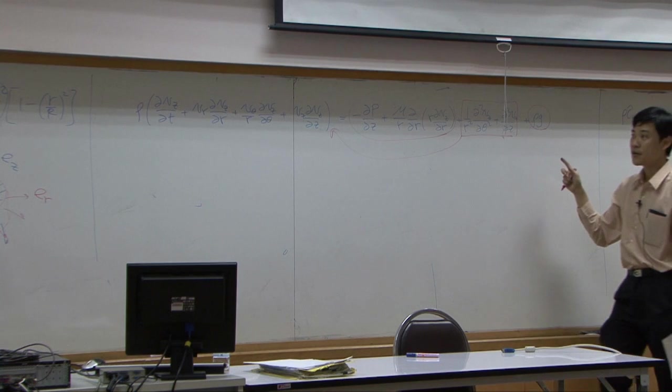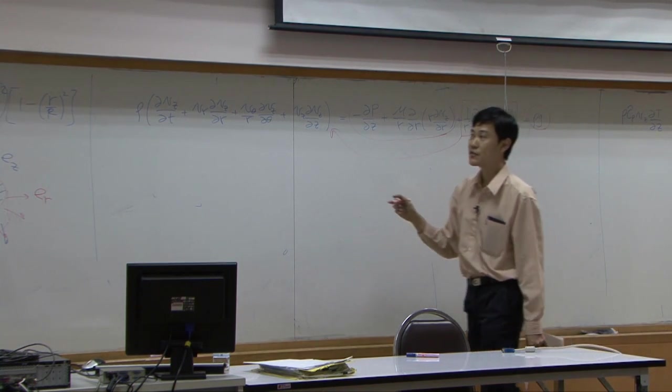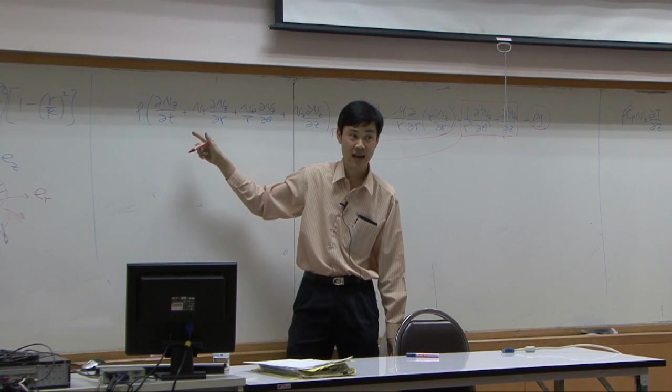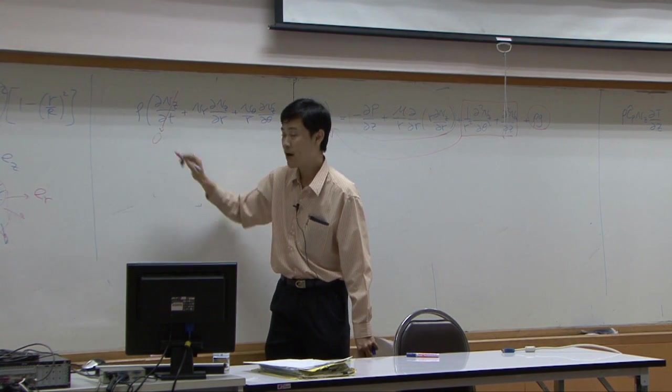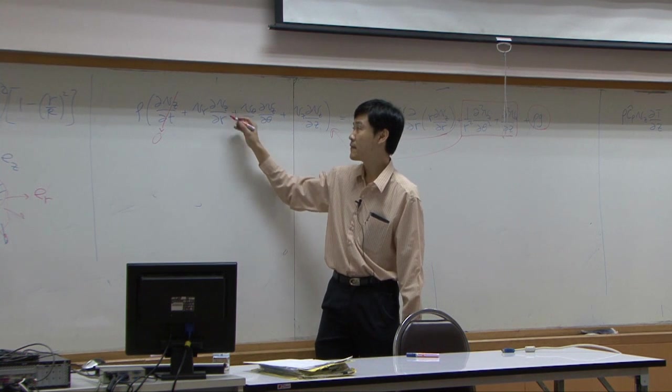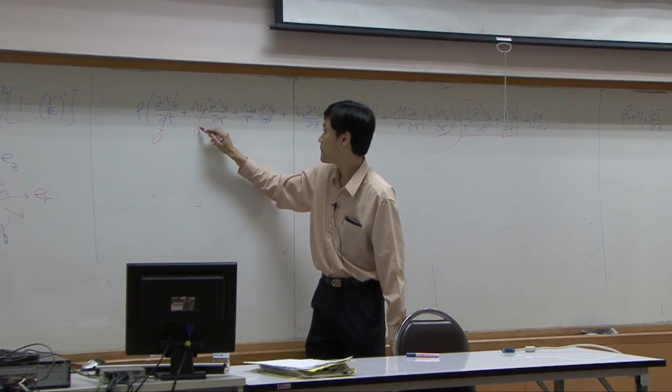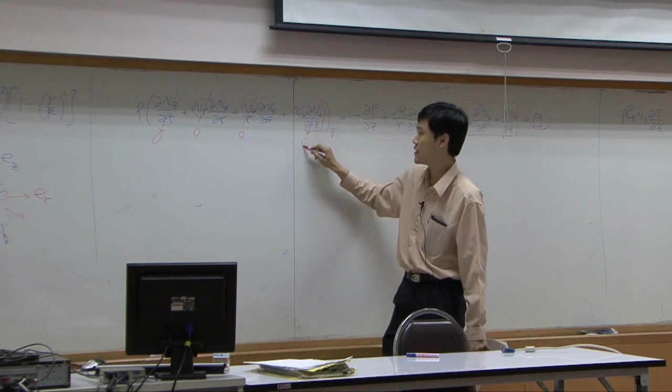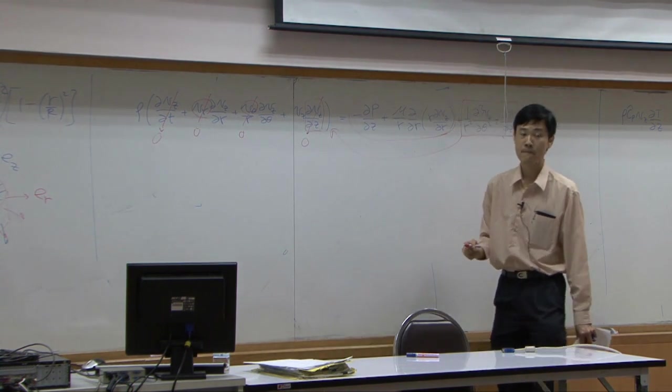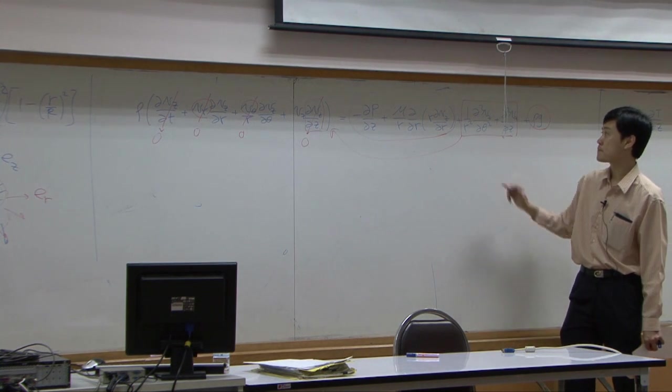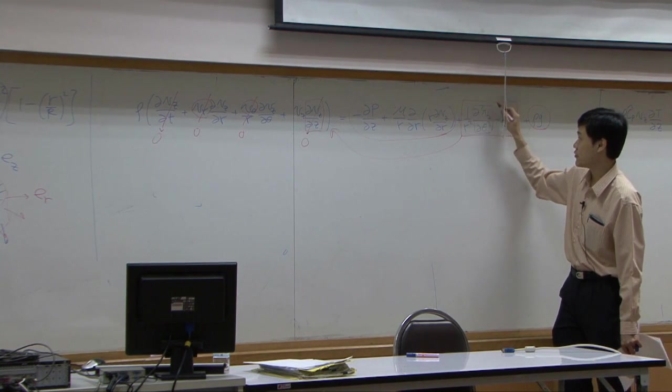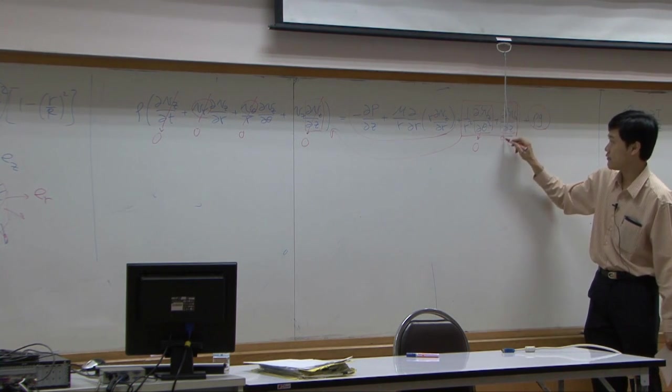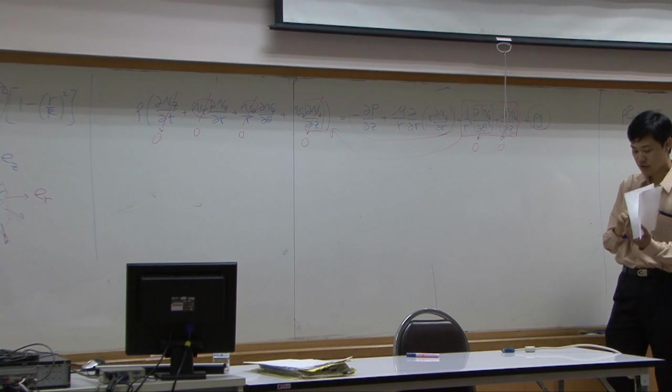So if you consider equation of motion, let's start by the first term. Vz is not function of time, this term is dropped as zero. Vr is zero. Vtheta is zero. And Vz does not change with respect to z. This term is zero. Vz does not change with respect to theta, it becomes zero. Vz does not change with respect to theta, it's zero as well.